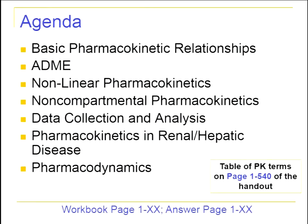Here's the agenda for what we'll cover in the next hour. We'll start with basic pharmacokinetic relationships, then cover absorption, distribution, metabolism, and excretion — the four main pillars of pharmacokinetics. We'll also discuss nonlinear pharmacokinetics and pharmacogenetics, non-compartmental pharmacokinetics, and data collection and analysis. We'll address how renal and hepatic disease impact drug pharmacokinetics, and finish with a bit on pharmacodynamics, which occasionally pops up on the exam.